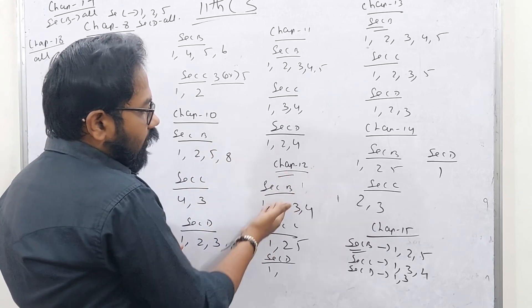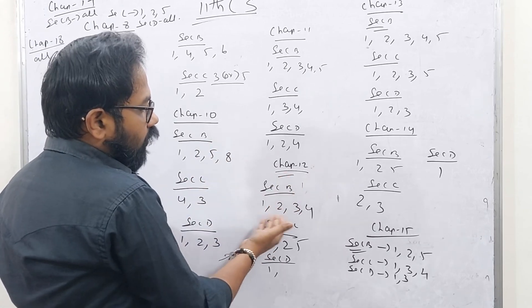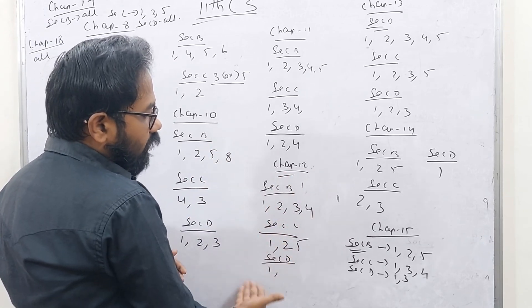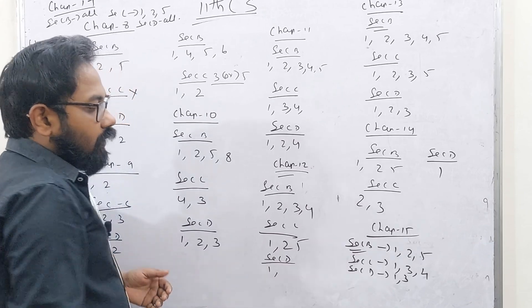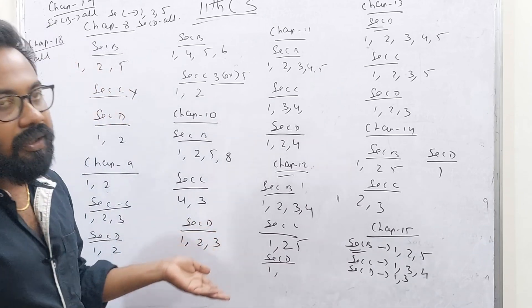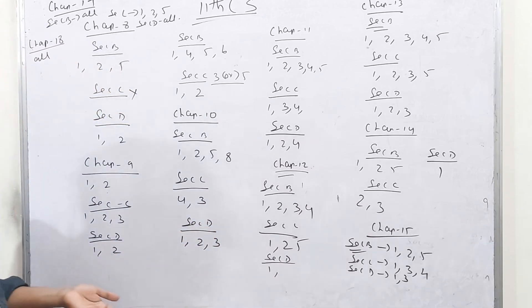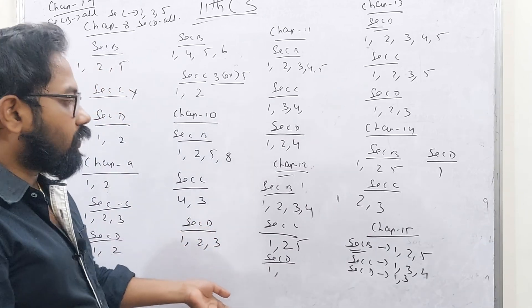Chapter 12: Section B is 1, 2, 3, 4. Section C is 1, 2, 5. Section D is 1. In this lesson, I have a theory. I don't know the program. So it's easy.